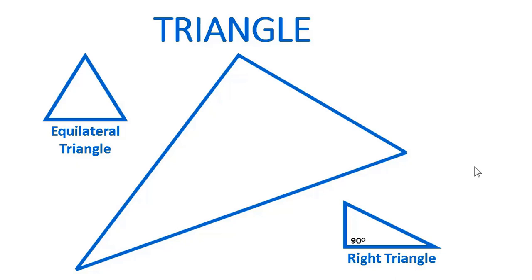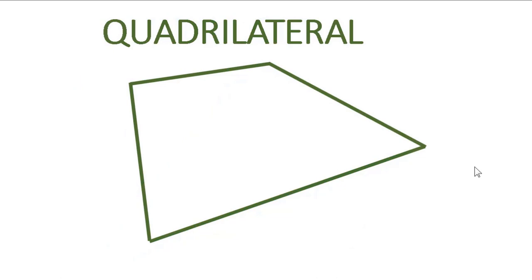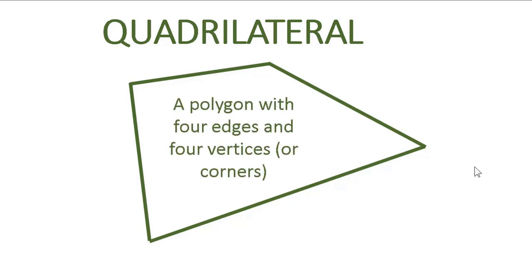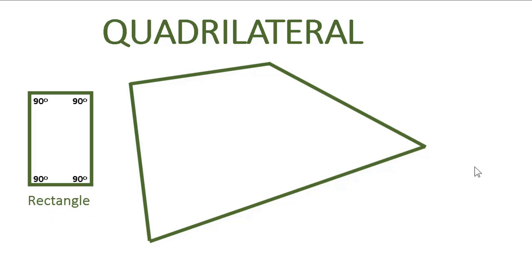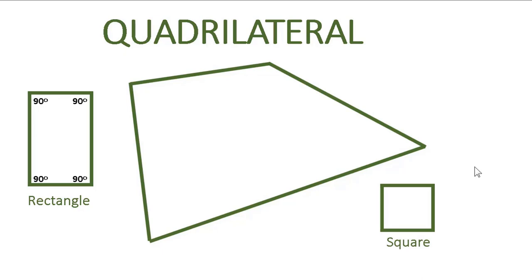So if we go from three sides to four sides, what are we talking about? You thought I was going to say square, didn't you? We're talking about a quadrilateral — a polygon with four edges and four vertices, and of course four angles. Now if those four angles are 90-degree angles, you have a rectangle. And if that rectangle has all four sides the same length, with 90 degrees at each corner, it would be, as you know, a square. A square is a very special quadrilateral.